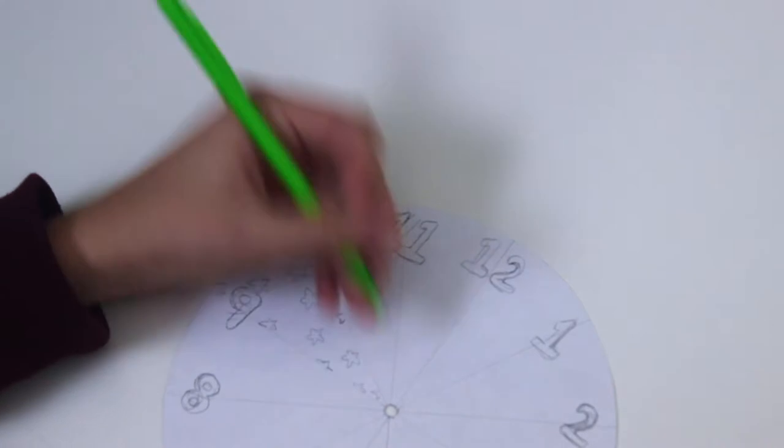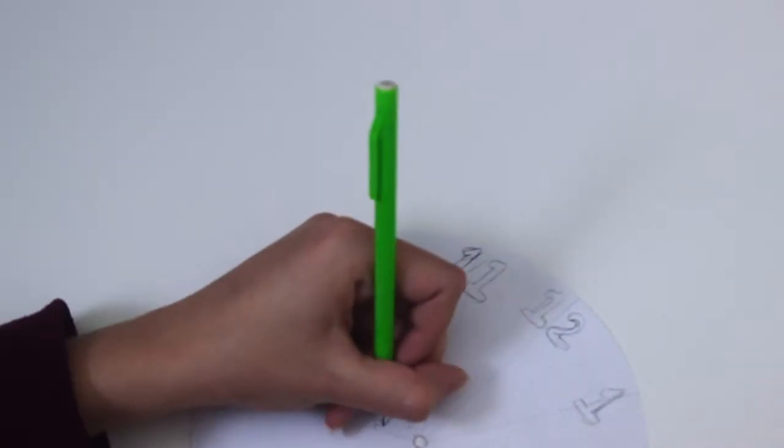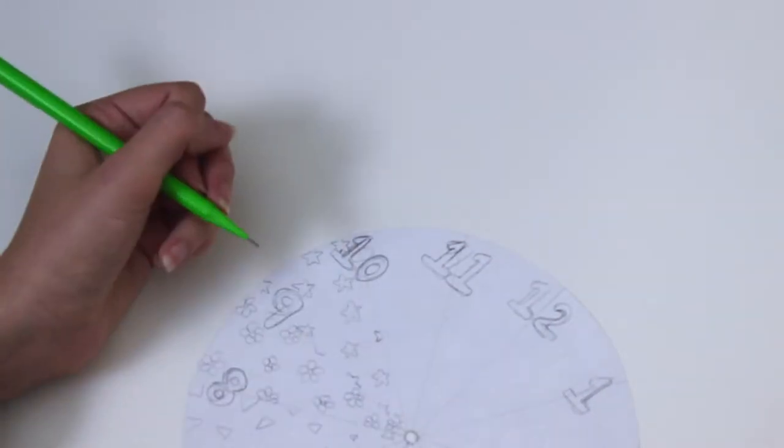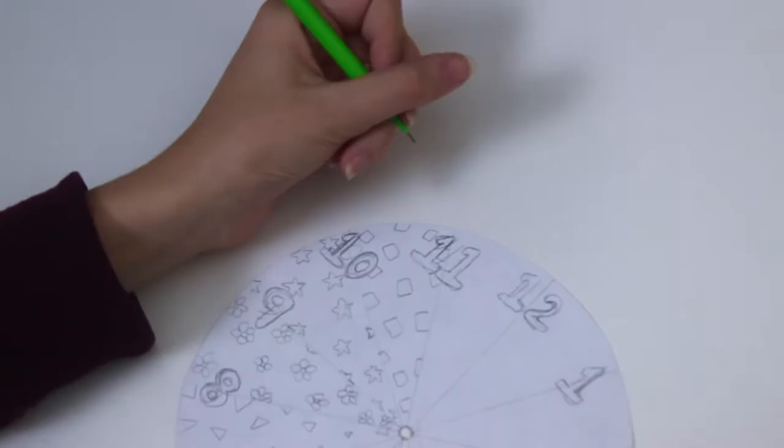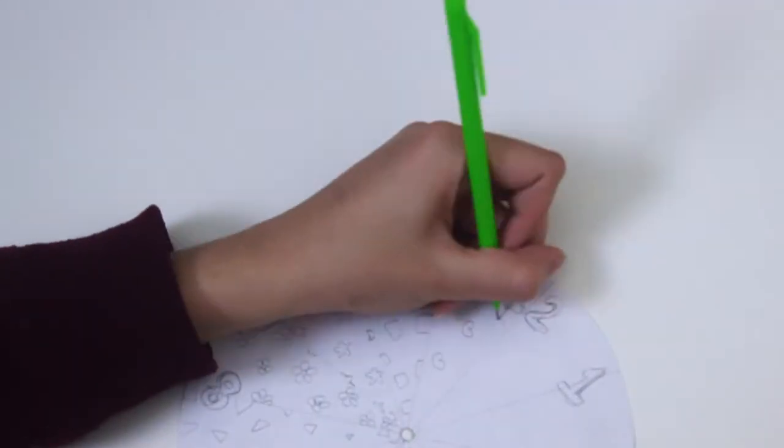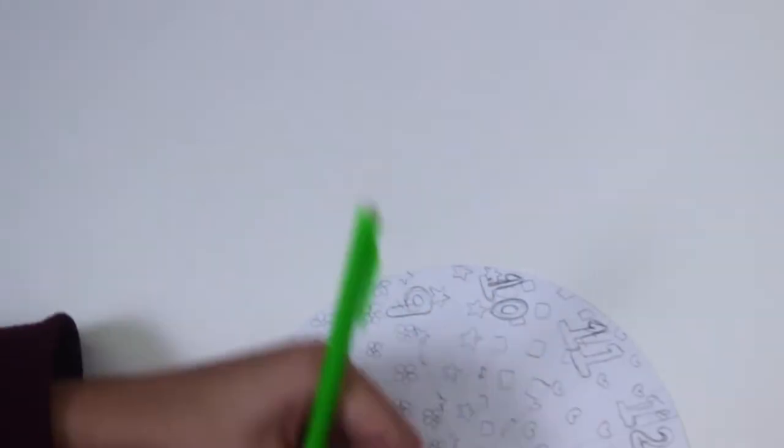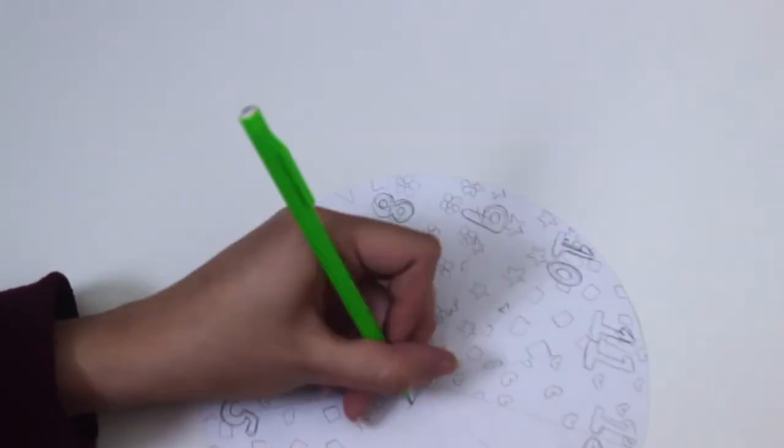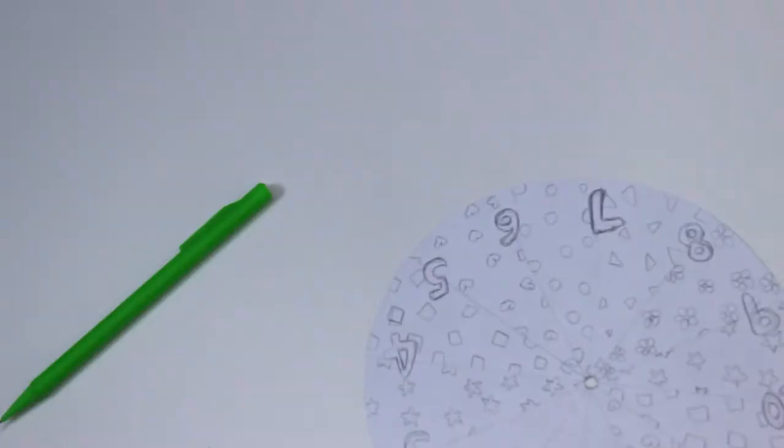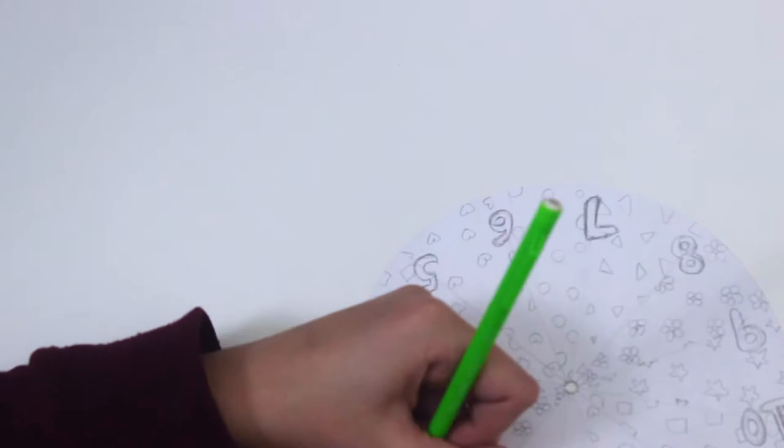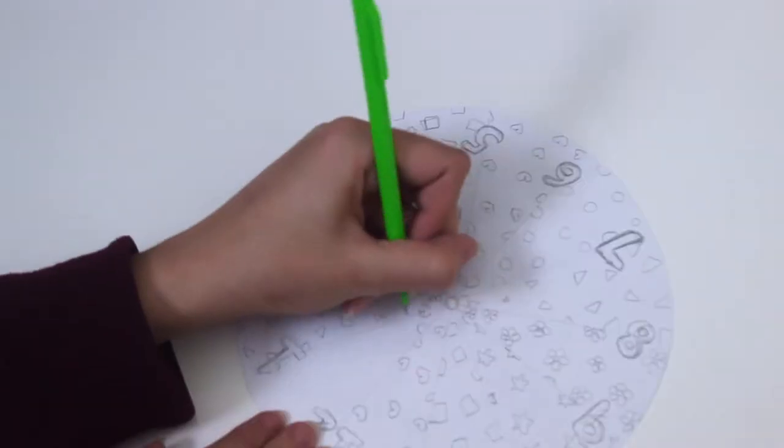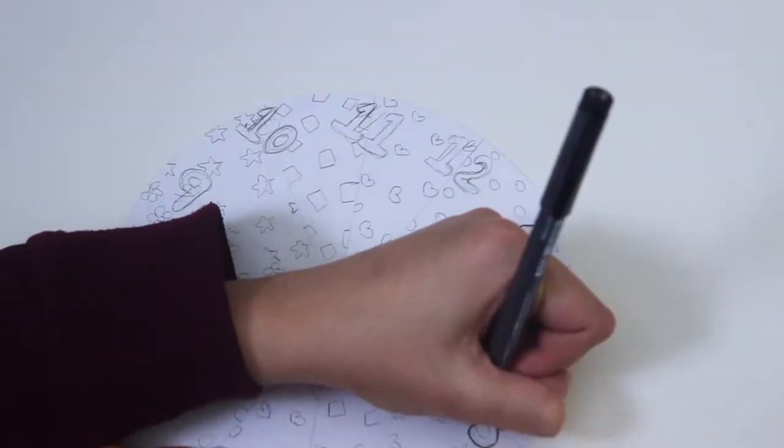I then decided I was going to add in different shapes. So I did stars, flowers, triangles, squares, and hearts. And then I did the opposite design on the opposite slice of the clock if that makes sense. So if I did circles on one side, I would then do it on the other side of the clock.